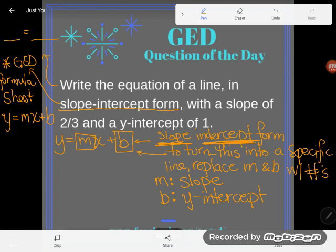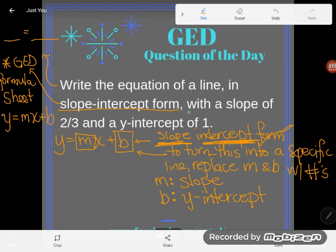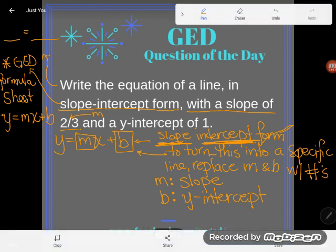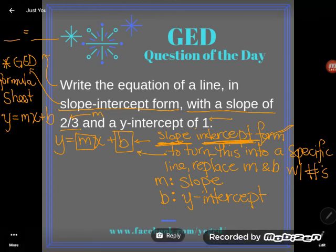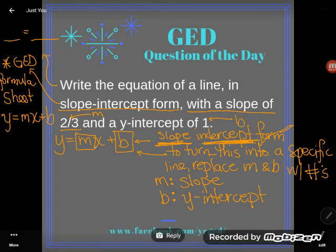Now they've been so nice to me in this particular problem. Look at the information they've given me. They tell you that your line has a slope of two-thirds. Well, guess what? Slope is M. So they just told you your M. And they said it has a y-intercept of one. Well, we said that B is the y-intercept. So they've also told you your B.